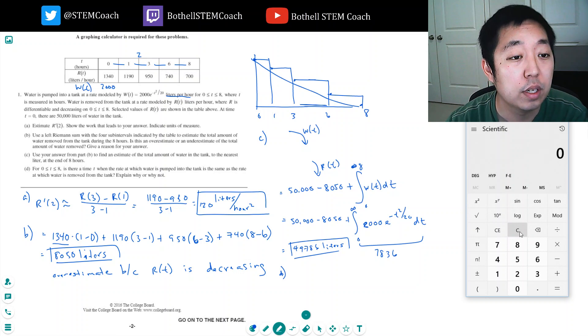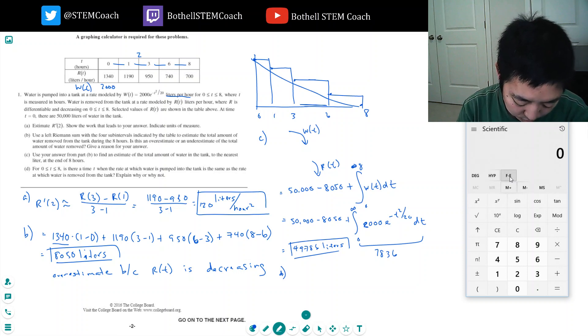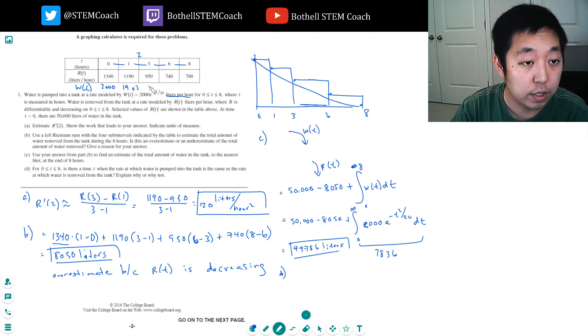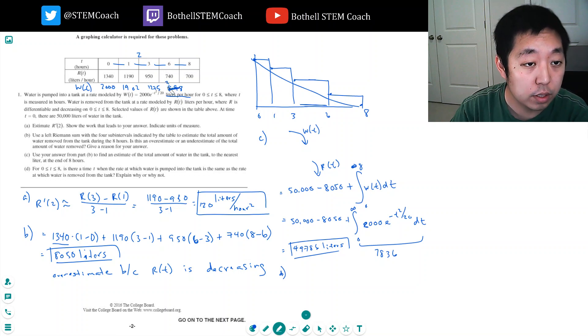Let me use a regular calculator. 2000 e to the negative 1 over 20 is 1902. 2000 e to the minus 9 divided by 20 is 1275.